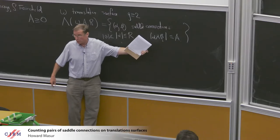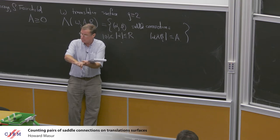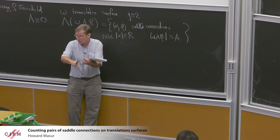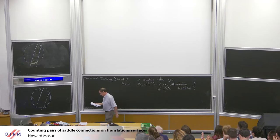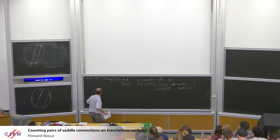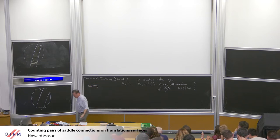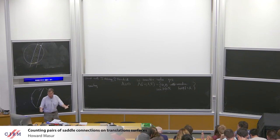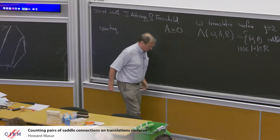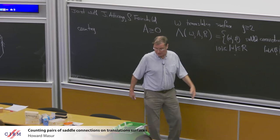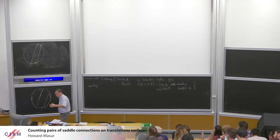You can think of this as the virtual area of the saddle connections, but they may not actually bound a parallelogram — they could cross, and so forth, but they're just thought of as vectors. We're interested in counting pairs. The theorem is going to be a statement about almost every translation surface, and the measure is the so-called MVS measure.